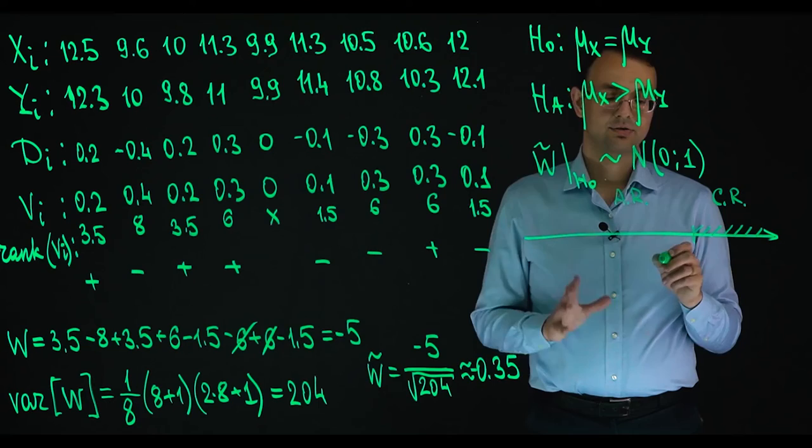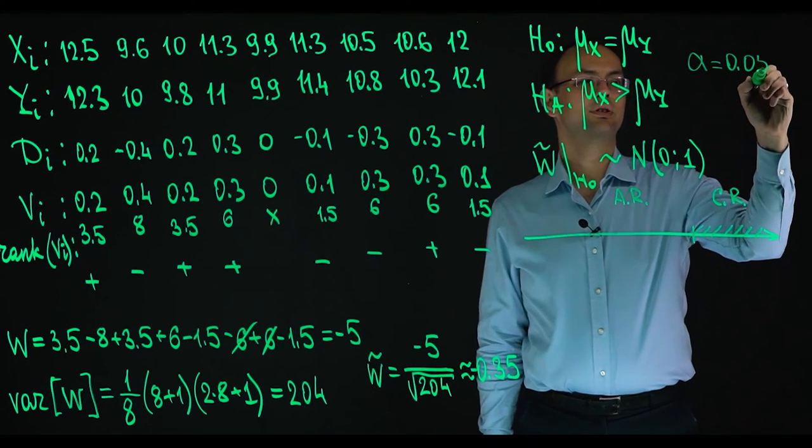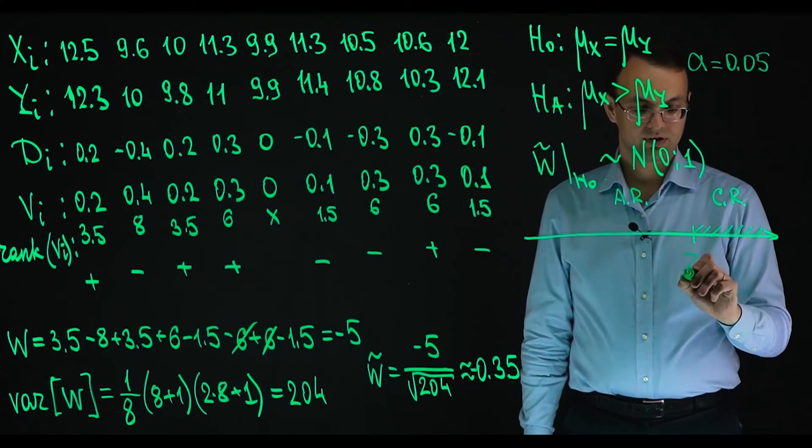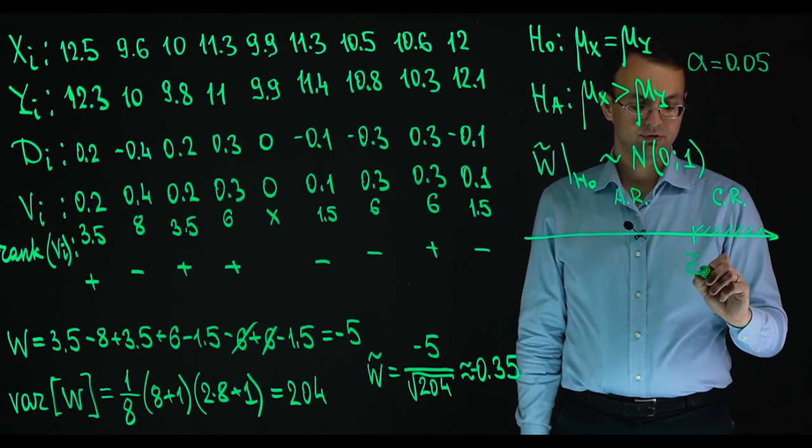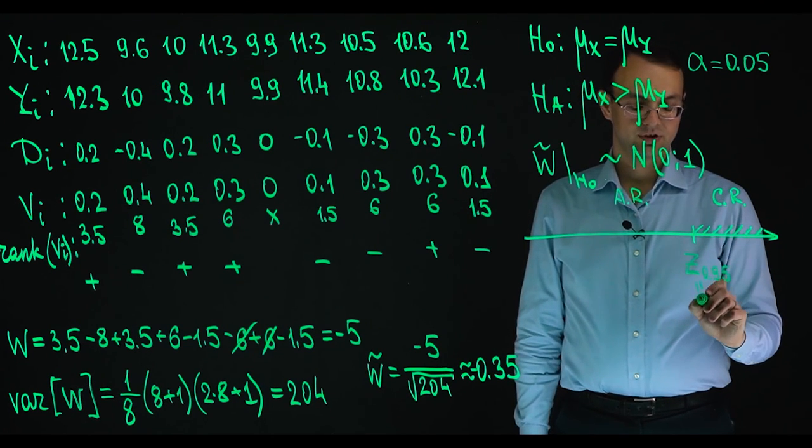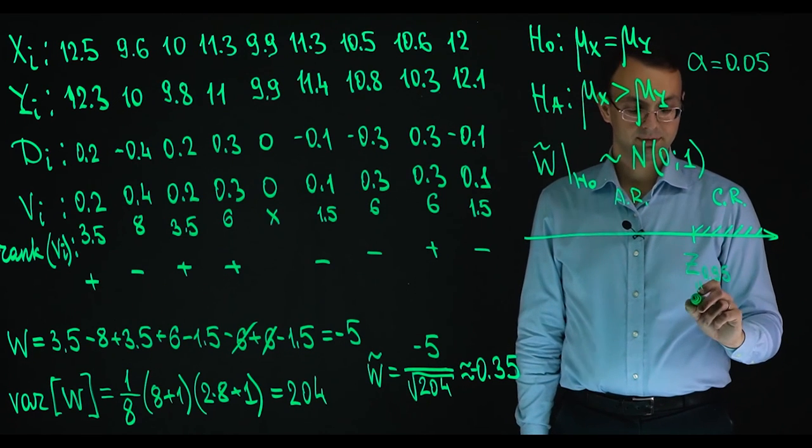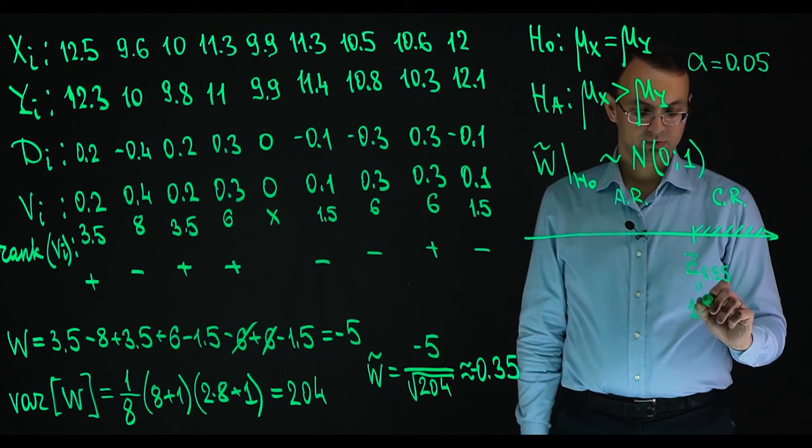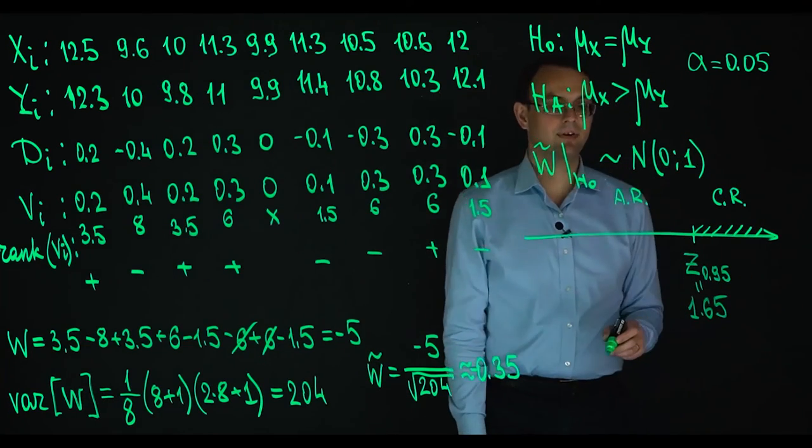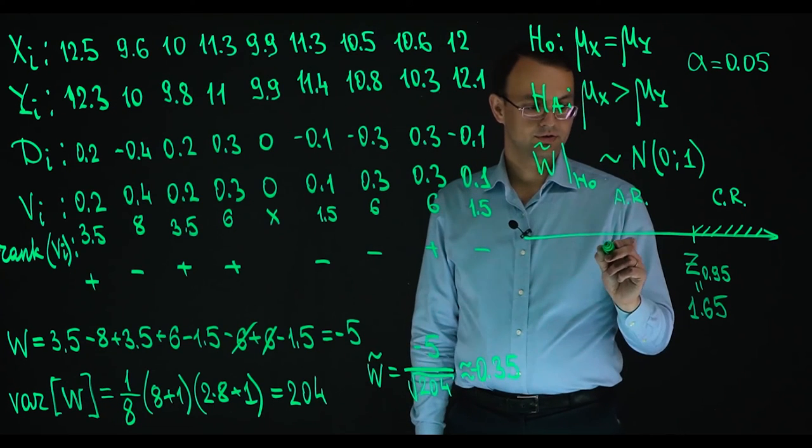Let's use the standard alpha 0.05 as we always usually do. So then this is the quantile of the standard normal distribution of the level 0.95. This quantile is equal, so 0.95 is 1 minus alpha. So this quantile is equal to 1.65. I can find this value in the table.